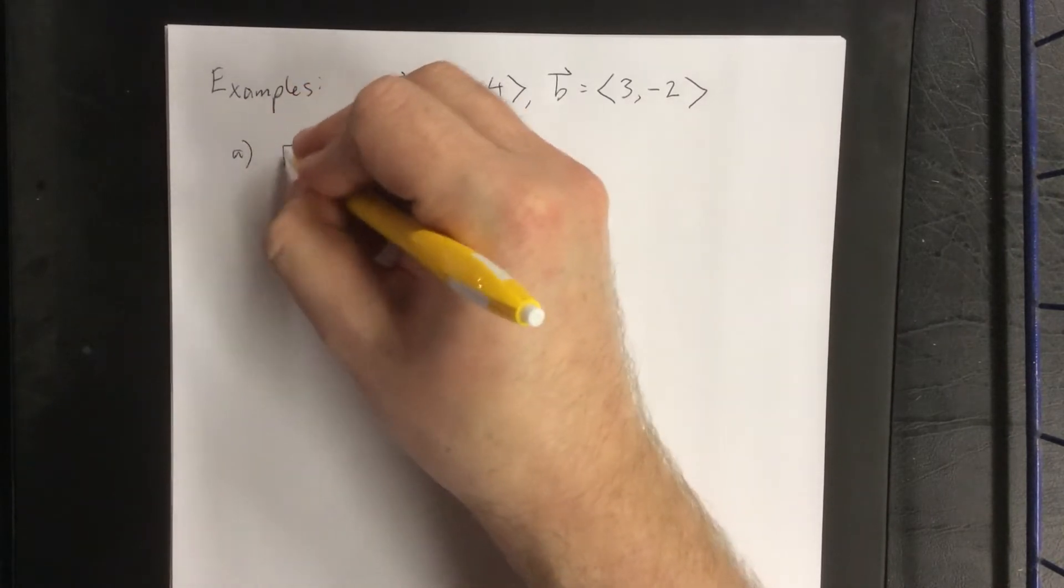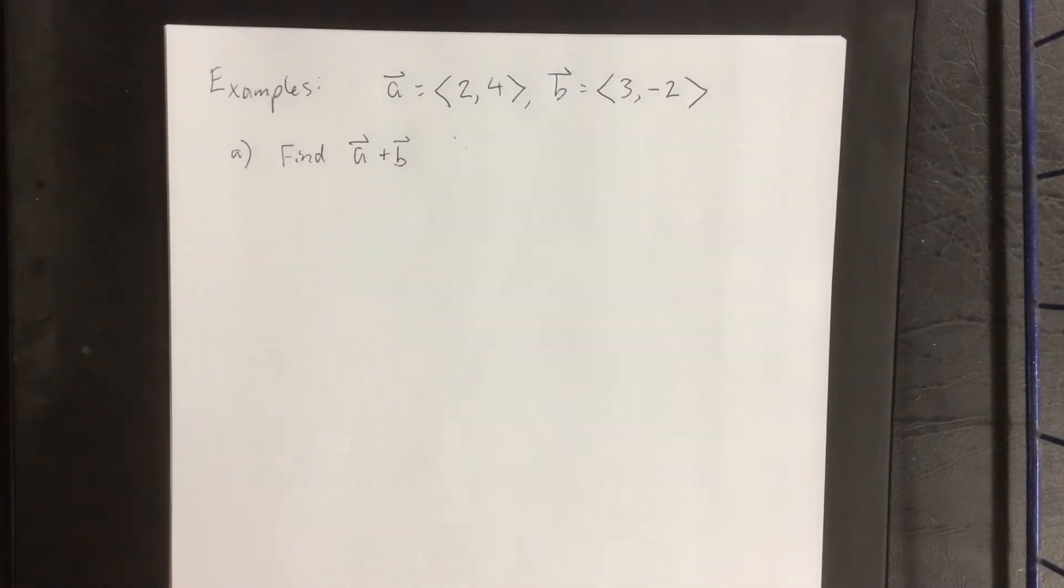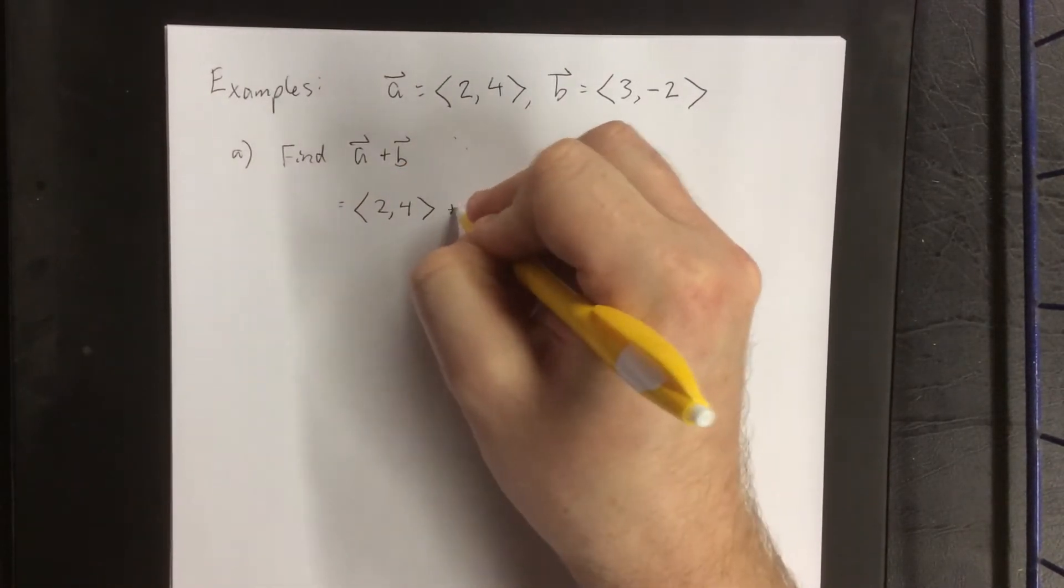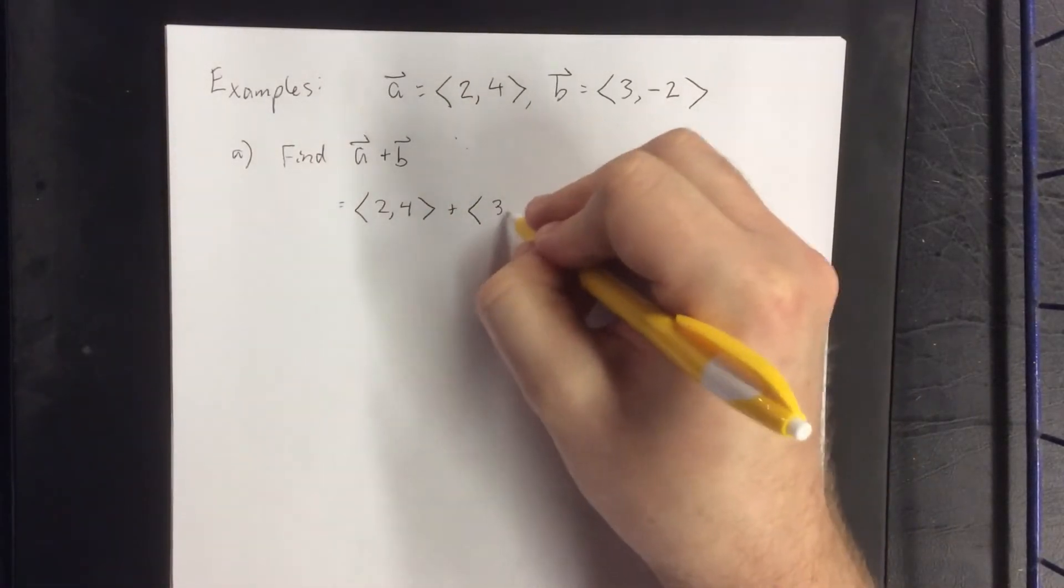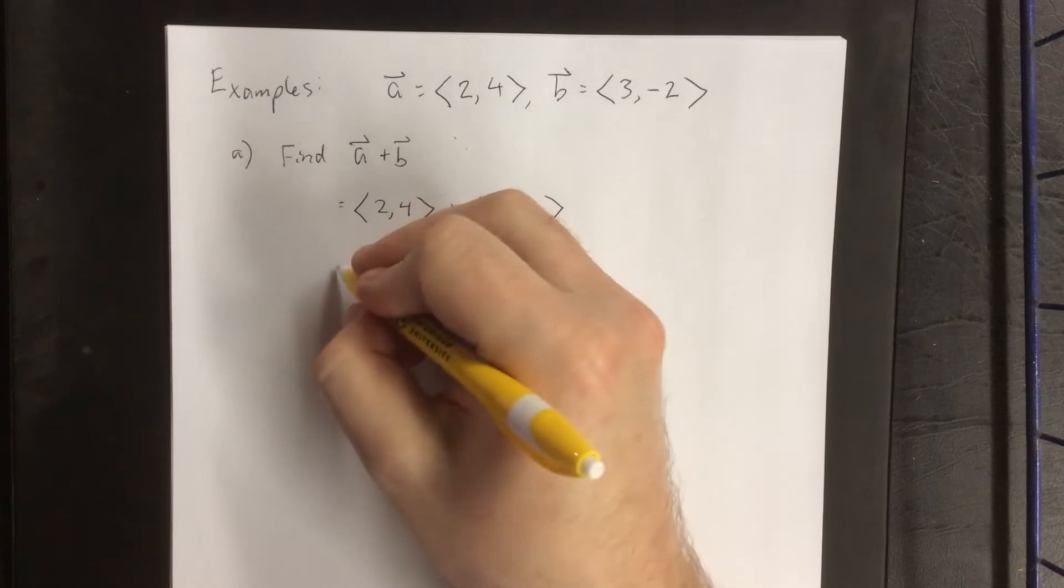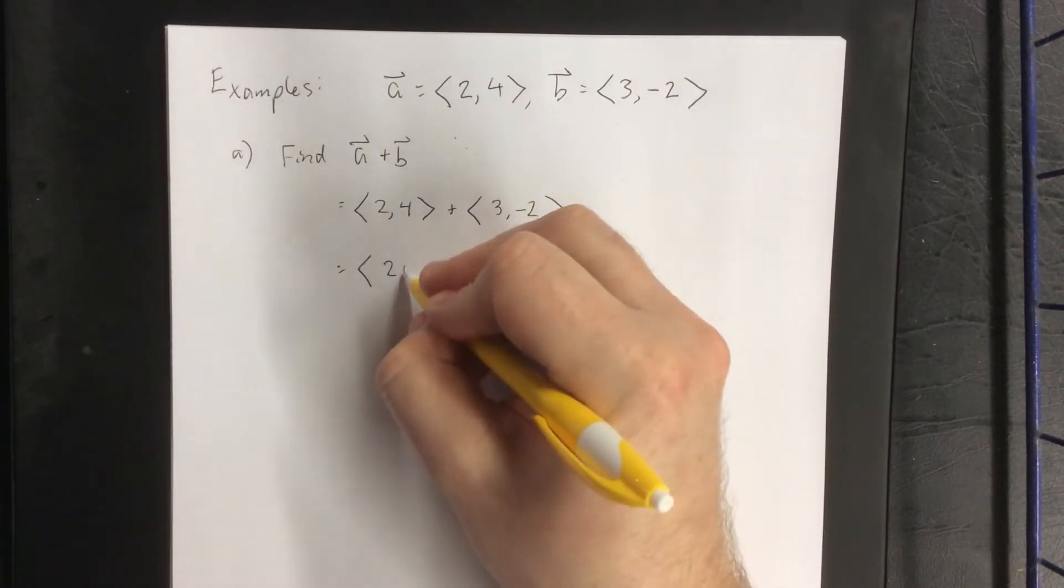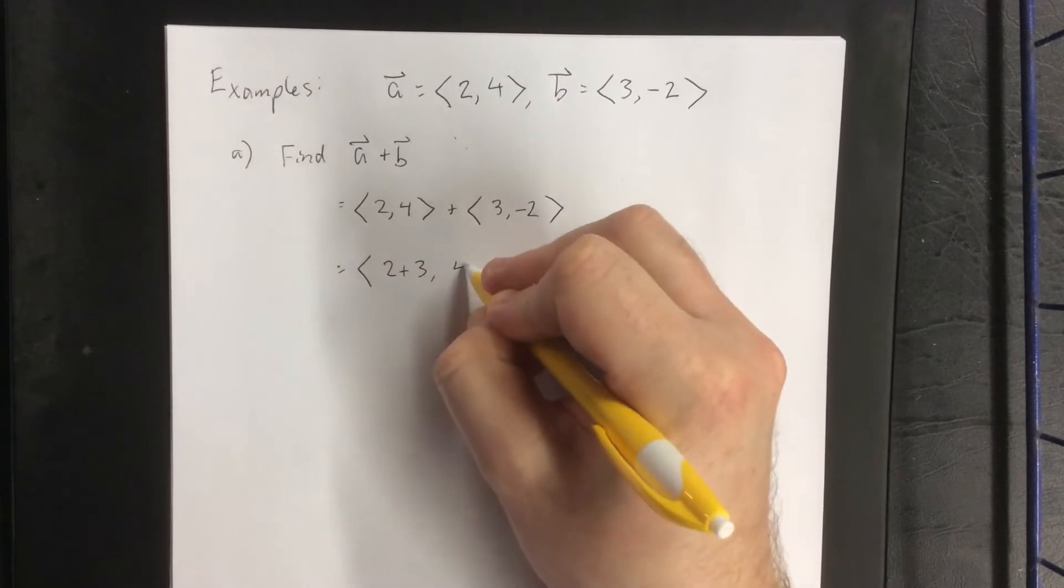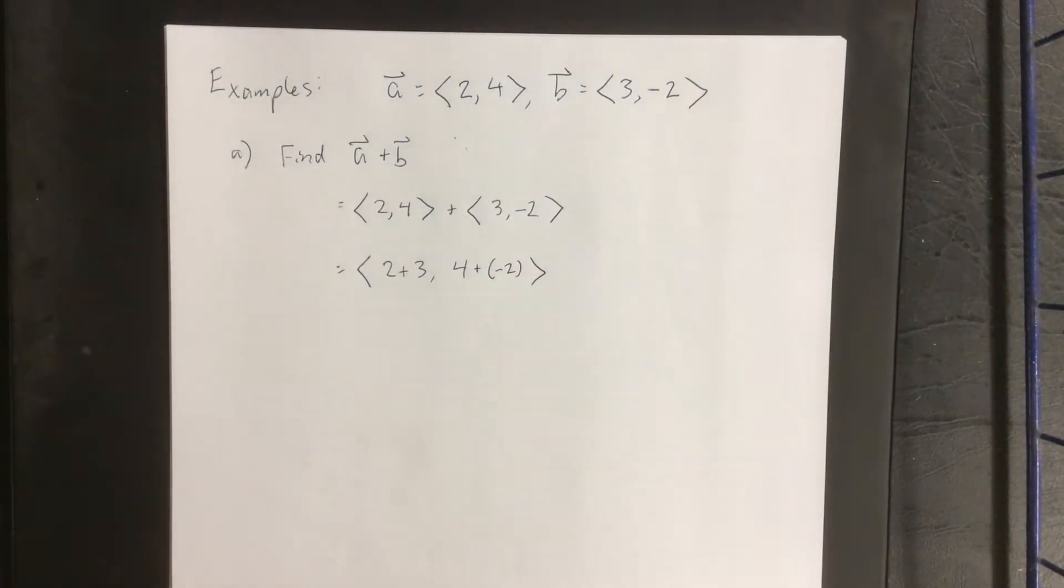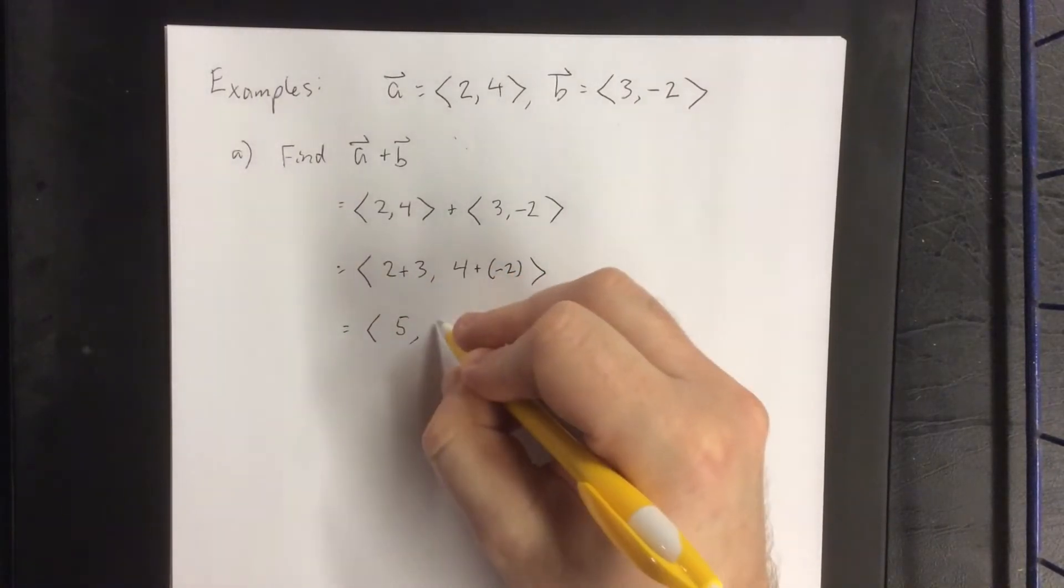First thing I'd like to do is find the vector that would be A plus B. Now A plus B would be the vector <2, 4> added to the vector <3, -2>. Now adding these component-wise, the first component will be 2 plus 3, and the second component will be 4 plus negative 2. Simplifying this as much as possible, we would get the vector <5, 2>.